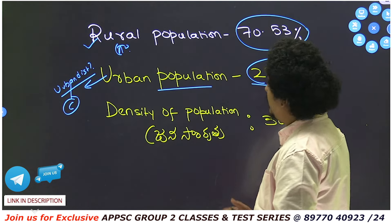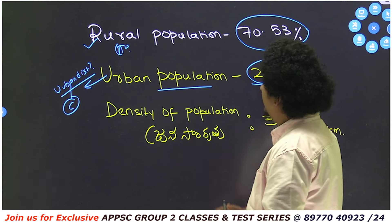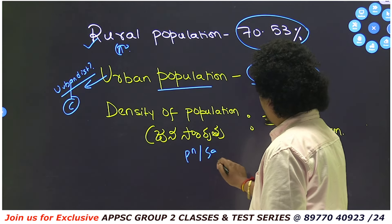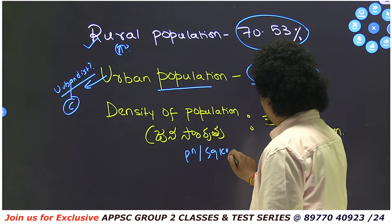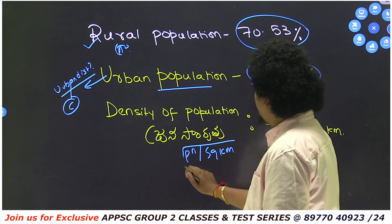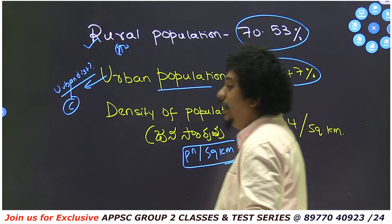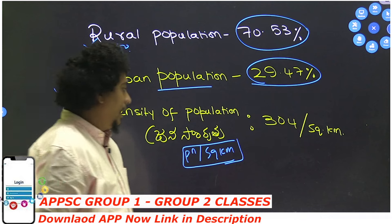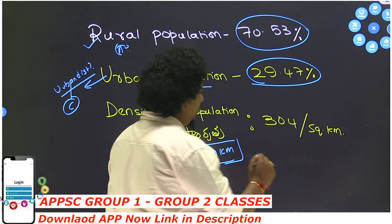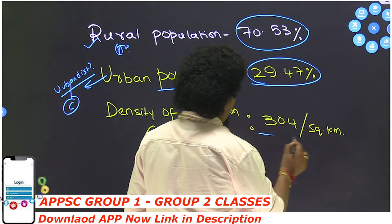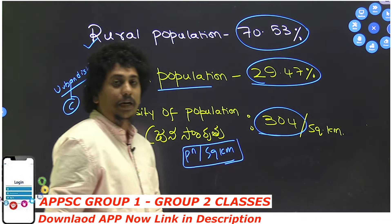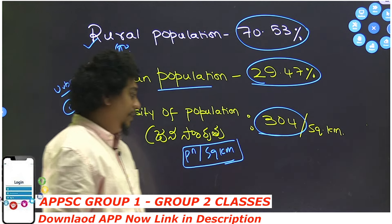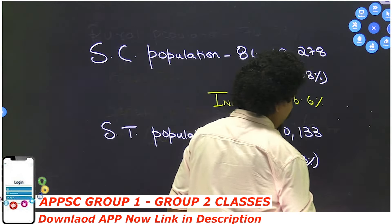Next, density of population. Population density is calculated as population per square kilometer area. The density of population in Andhra Pradesh is 304 persons per every square kilometer.